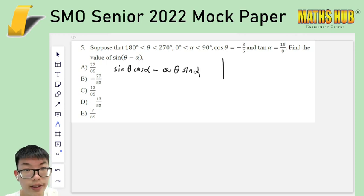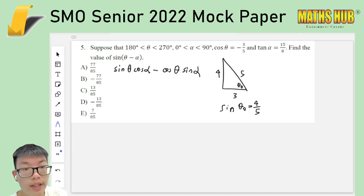Now for the theta, cosine theta is negative 3 fifth and it is in the third quadrant. So you can draw the triangle if you like. I use theta naught because that would be the principal angle. And so if you take the sine of this principal angle, it is 4 over 5. And the actual value would be negative. So sine theta is supposed to be negative 4 fifth.